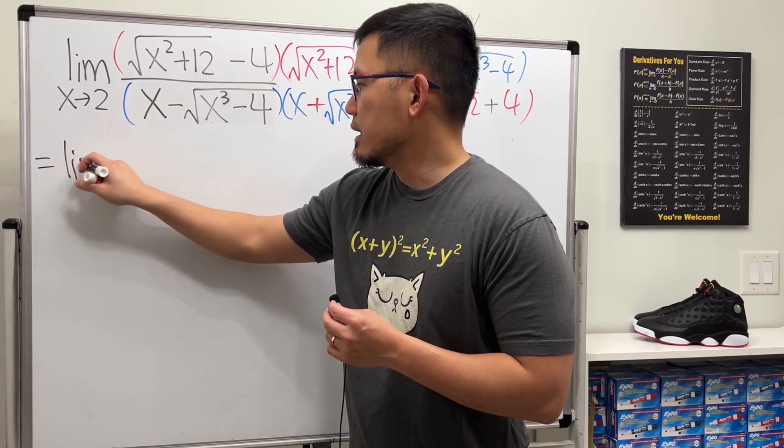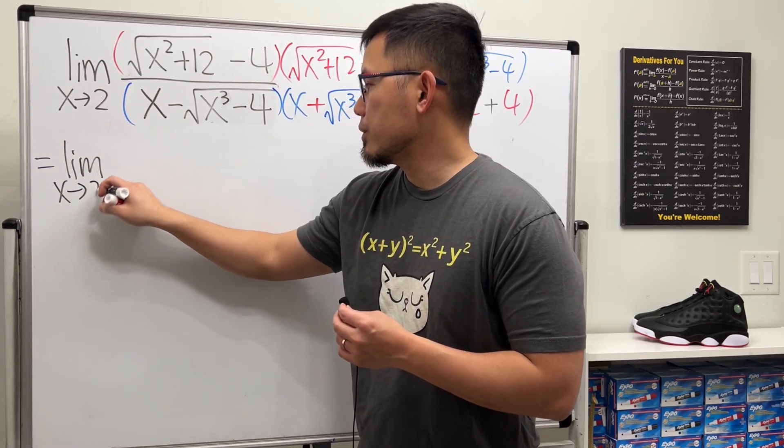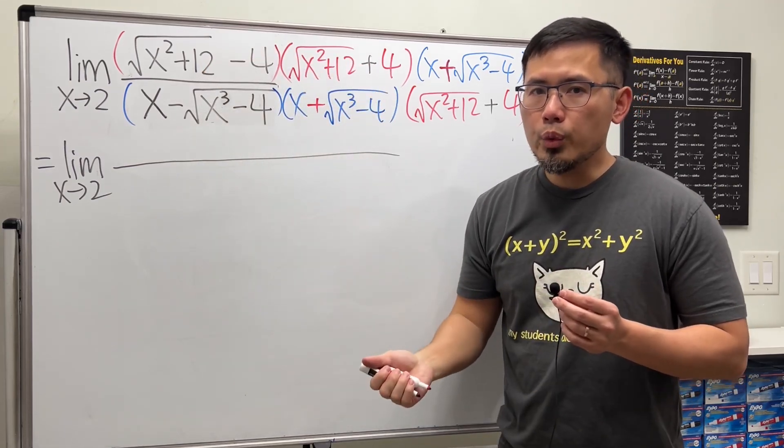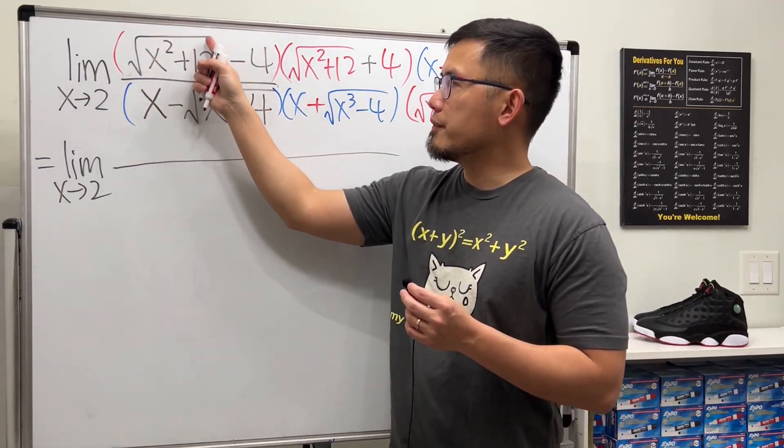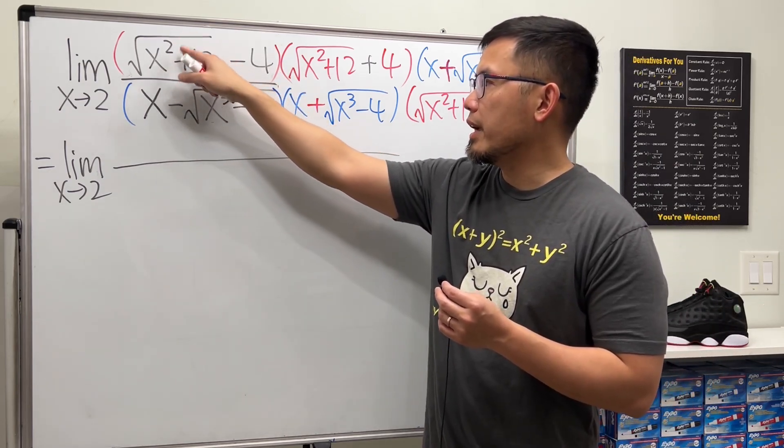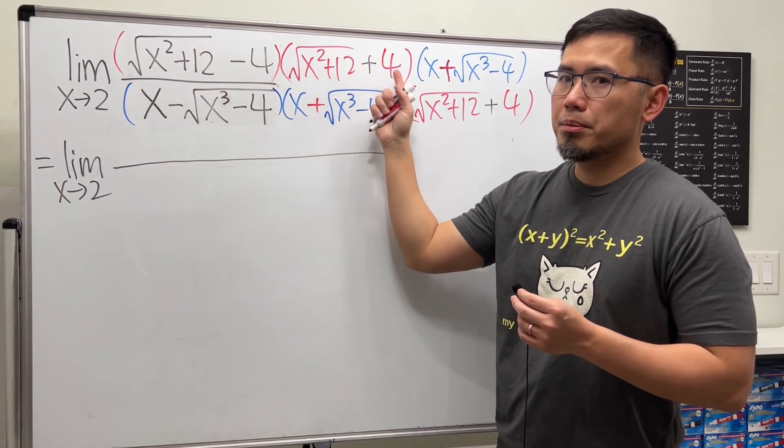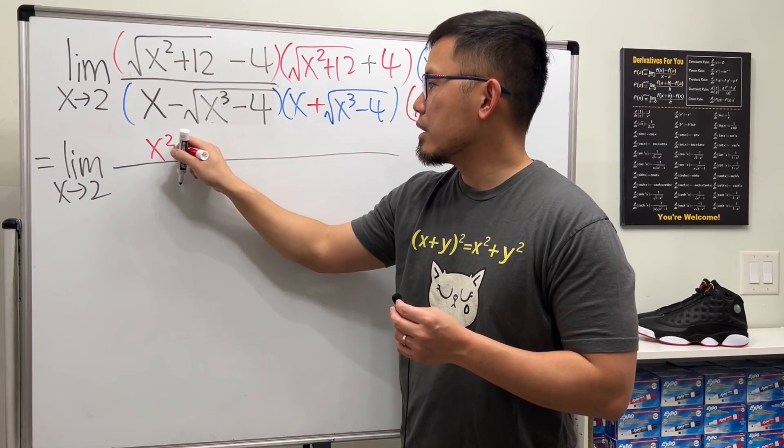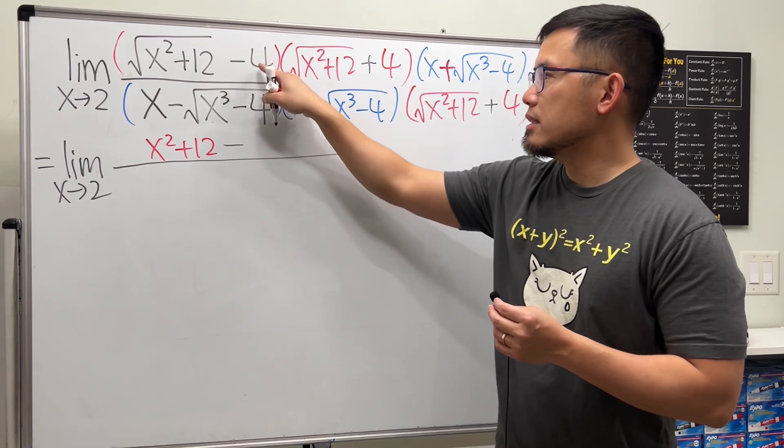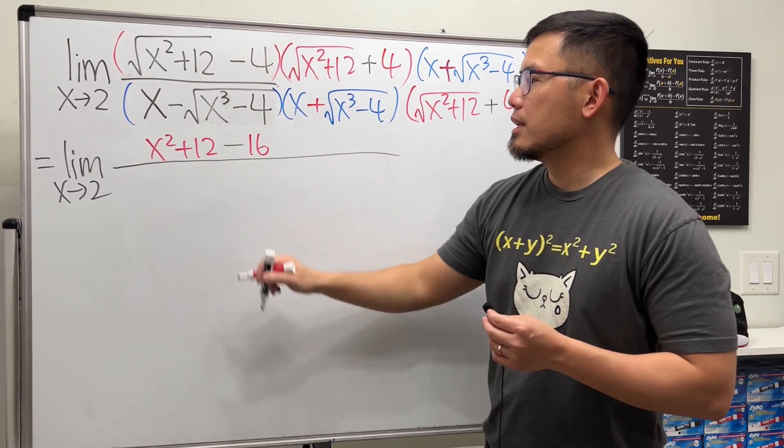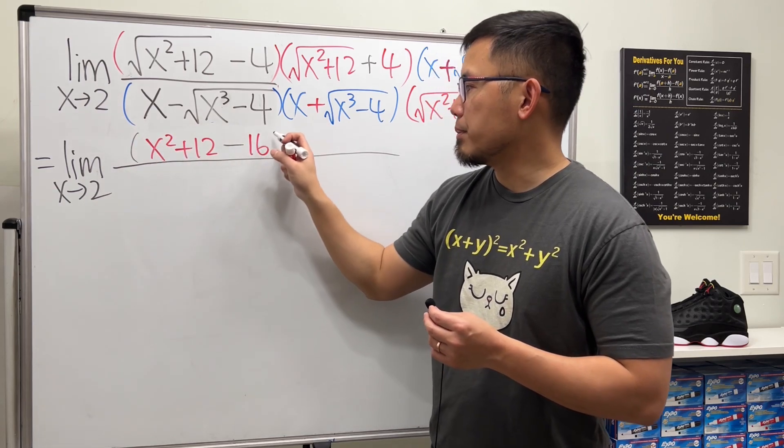So we will get the limit as x approaching 2. And now, multiplying out the conjugate, all we have to do is square the first minus square the second, because this is in the form of a minus b times a plus b. Square the first, we will get x squared plus 12. And then minus square the second, 4 squared, we get 16. So that is the first part.